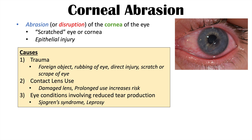Another common cause of corneal abrasion is contact lens use. If the contact lens is old or damaged — with a tear or sharp edge — and you continue to use it, it can slide around on the cornea and cause scraping or scratching, leading to a corneal abrasion. The longer you use contact lenses in general, the higher the risk of getting a corneal abrasion.